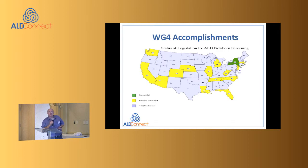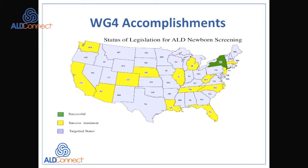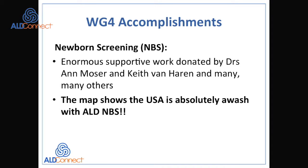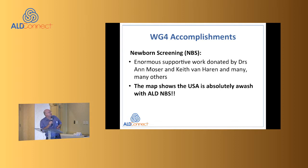That's a brief look at the map of the USA and where we're at. I've put Connecticut in there as being through with New York. The yellow states are the states that show success is fairly imminent, and the ones that are in grey are the ones we're all wanting to target now. I'd really like to acknowledge the enormous amount of work by Ann Moser and Keith, and all the many many other people — that map is very, very impressive.